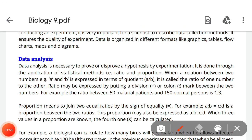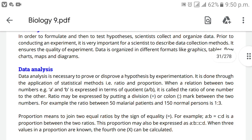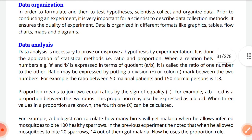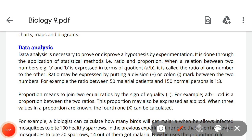The next thing after data organization is data analysis. Data analysis is necessary to prove or disprove hypothesis by experimentation. It is done through the application of statistical methods - ratio and proportions. When a relation between numbers, for example a and b, is expressed in terms of the quotient a/b, it is called the ratio of one number to the other.